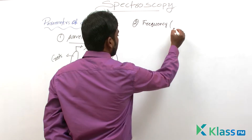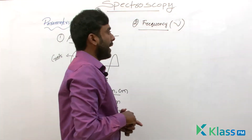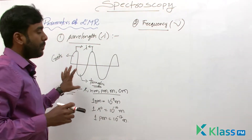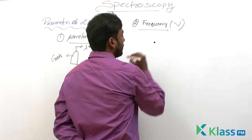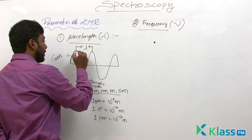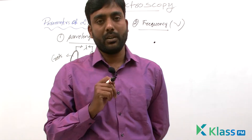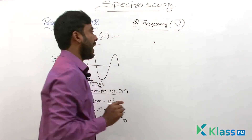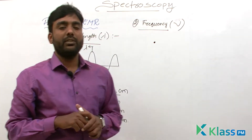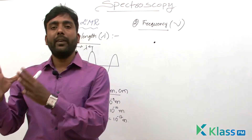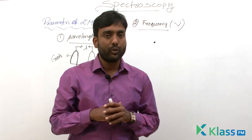The second parameter is frequency, shown by the Greek letter nu. Frequency is the number of cycles of a wave passing through a given point in one second. One cycle includes one crest and one trough. So the number of wave cycles passing through a given point in one second is called its frequency.